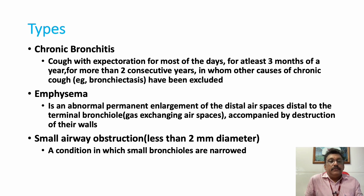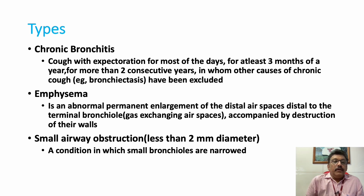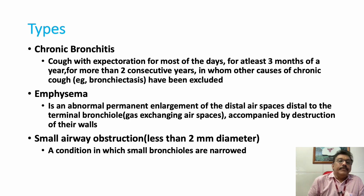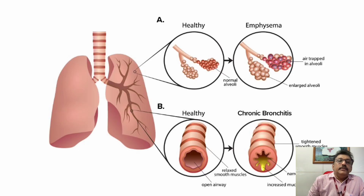The types of COPD are chronic bronchitis and emphysema, with the third being small airway obstruction. Chronic bronchitis is defined as chronic cough and expectoration on most days for at least three months over the last two consecutive years. Emphysema is an abnormal and permanent enlargement of distal air spaces distal to the terminal bronchioles, accompanied by destruction of the alveolar walls — permanent dilatation and destruction of alveoli.